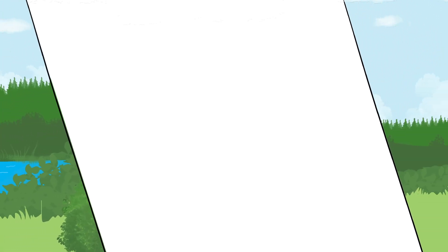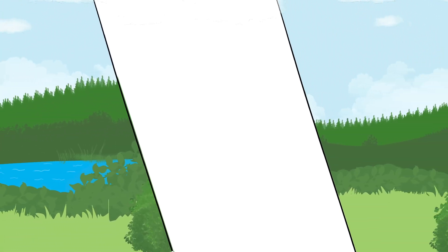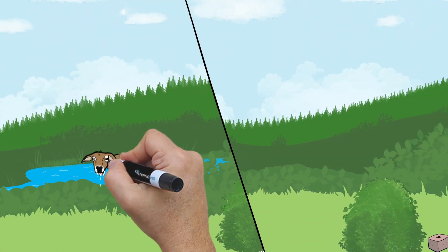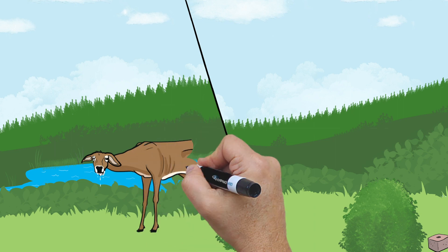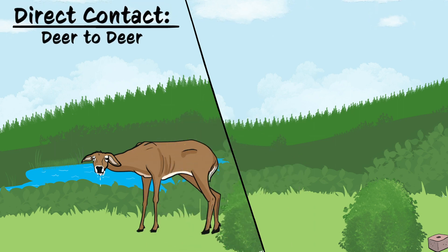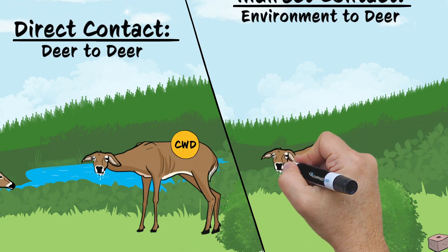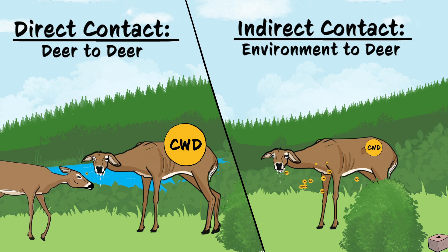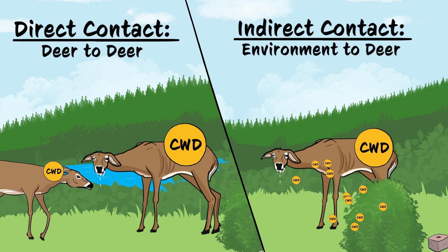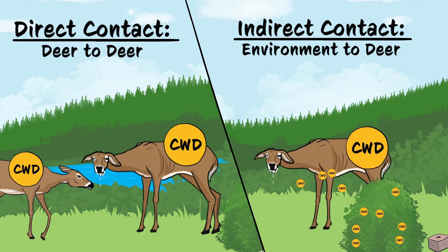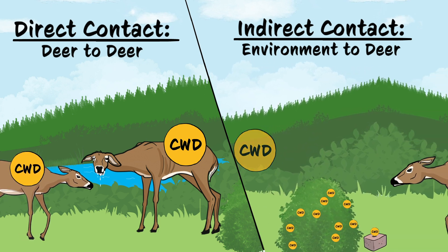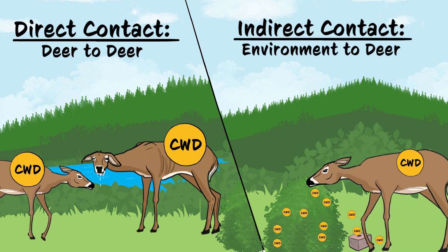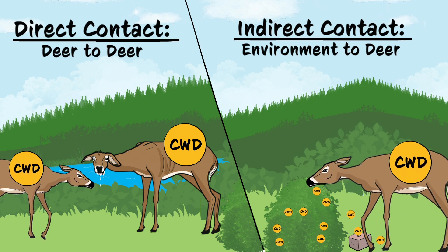There are many ways deer get exposed to CWD-causing prions, but generally they fall under two categories: direct and indirect contact. Direct contact is when prions are passed from deer to deer. Indirect contact is when deer are exposed to prions through contaminated objects or in the environment.